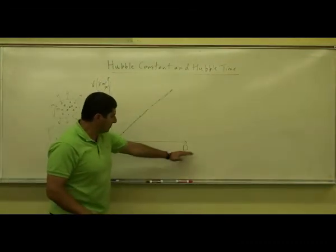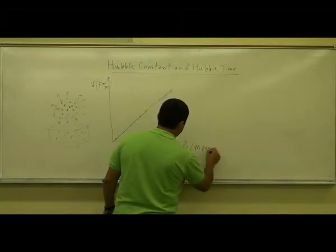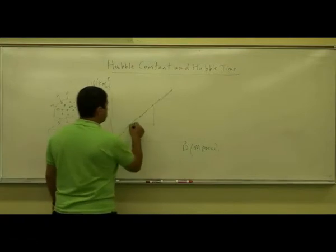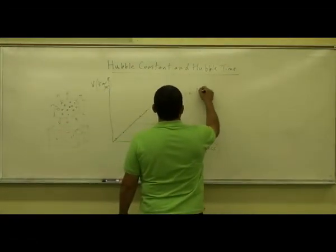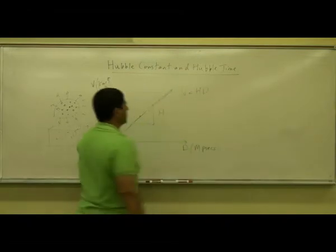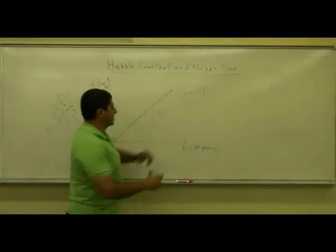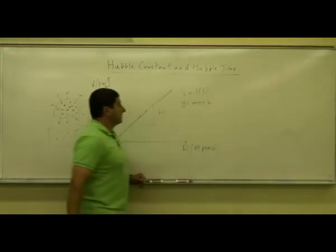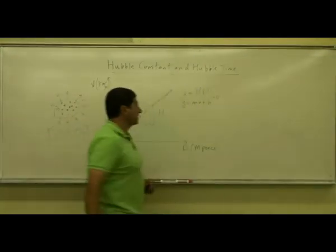So what we do is the common one is mega parsecs. And the slope of that is the Hubble constant. So it ends up being an equation V equals HD. V equals HD where this is like an equation like Y equals MX plus B where the Y intercept is zero.